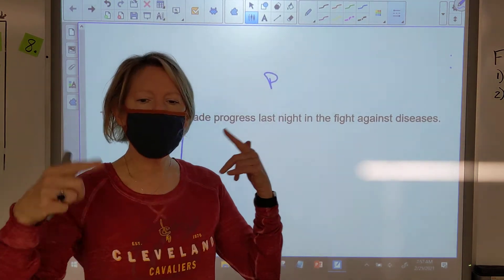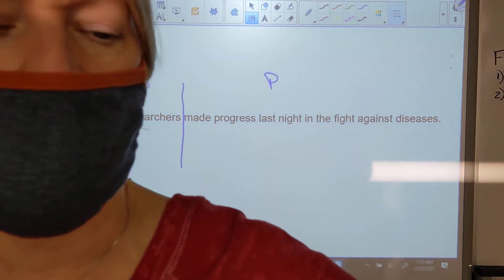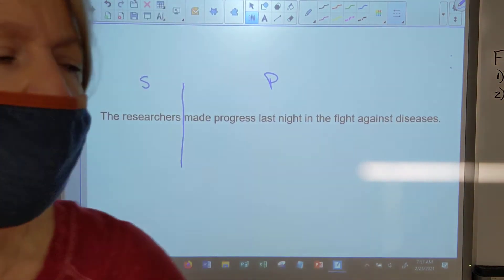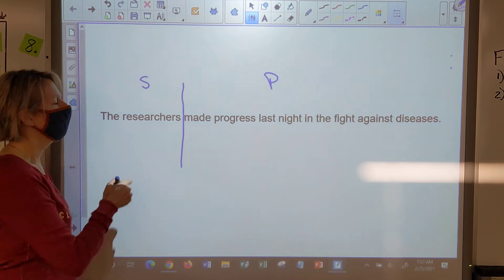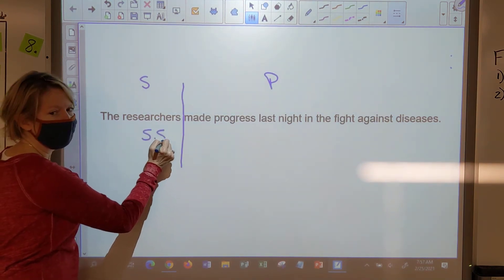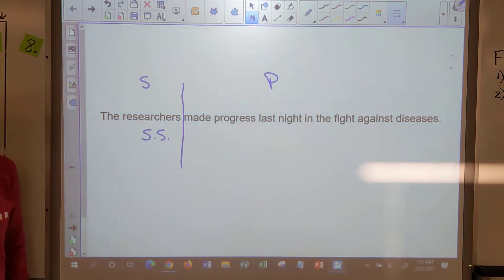By the way, I hope you've been started on this, kids in class, because there's a lot going on in this sentence. Bree? The simple subject is researchers. Ella? The simple predicate is made.